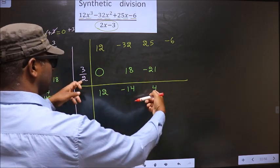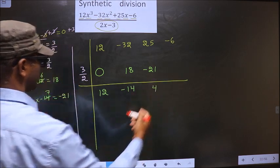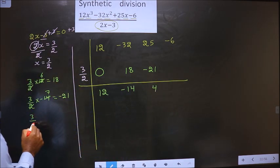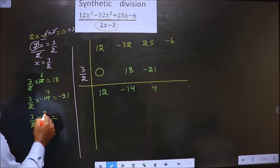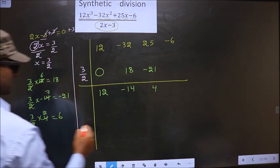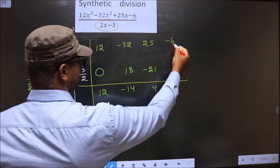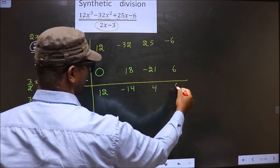Now we should multiply these 2 and write here. That is 3 by 2 into 4. We get 6. Now add these 2. We get 0.